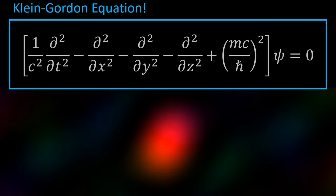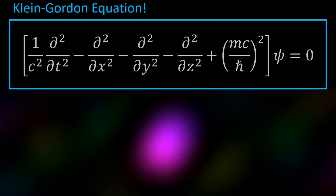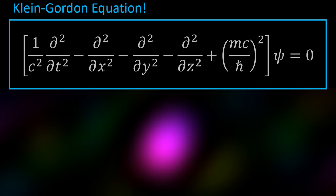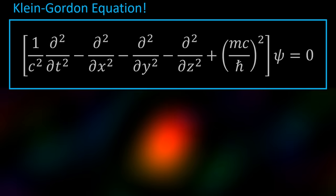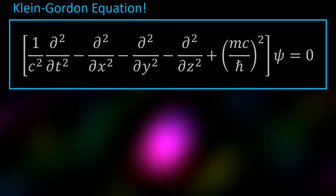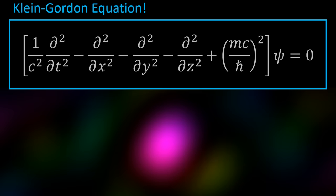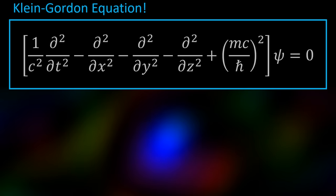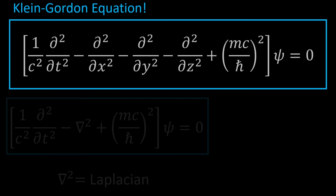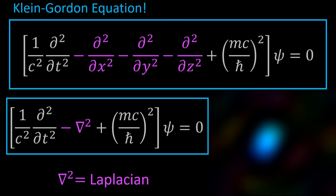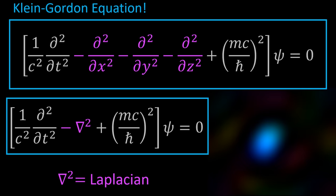The Klein-Gordon equation is a partial differential equation that describes the wave function of relativistic spin-zero particles. Here I'm showing a form where all partial derivatives are listed out in detail, which lets us see exactly which space and time derivatives go into the equation. But if we use the triangle and square notation we can really simplify this. All of those second derivatives in space can be replaced with the Laplacian, giving us a much simpler way of writing the equation.